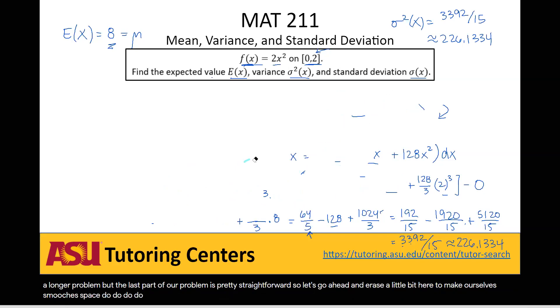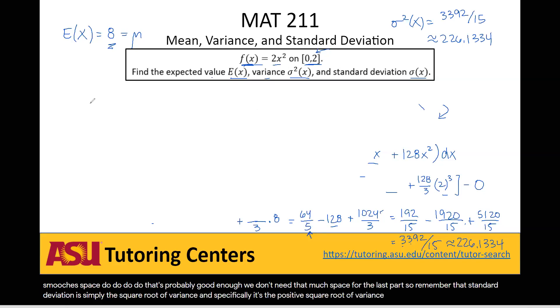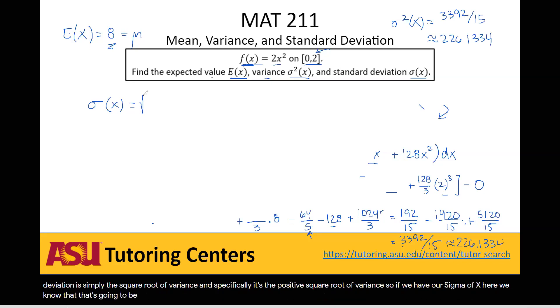So remember that standard deviation is simply the square root of variance, and specifically it's the positive square root of variance. So if we have our sigma of x here, we know that that's going to be the square root of our sigma squared x, our variance.